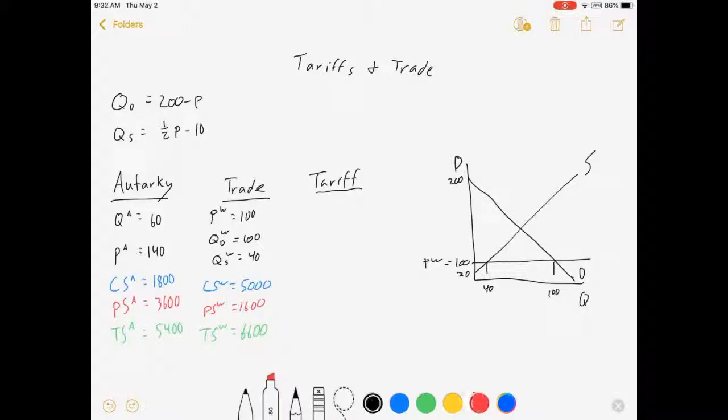In this situation, we're going to be dealing with a case where we're going to try to protect our producers by imposing a tariff. And I'm going to say tariff of $20. World price is still $100, which means our world price plus our tariff, the price our people have to pay is $120.